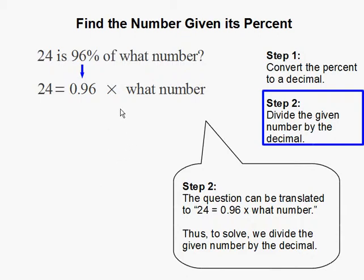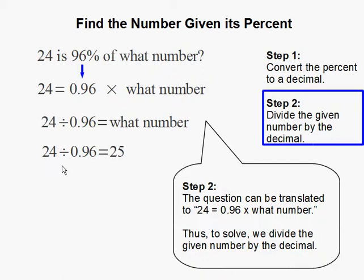Now all we need to do is solve for the what number part. To do so, we divide both sides by 0.96 and that will cancel this out. 24 divided by 0.96 will get us what we're looking for, and 24 divided by 0.96 gets us 25.